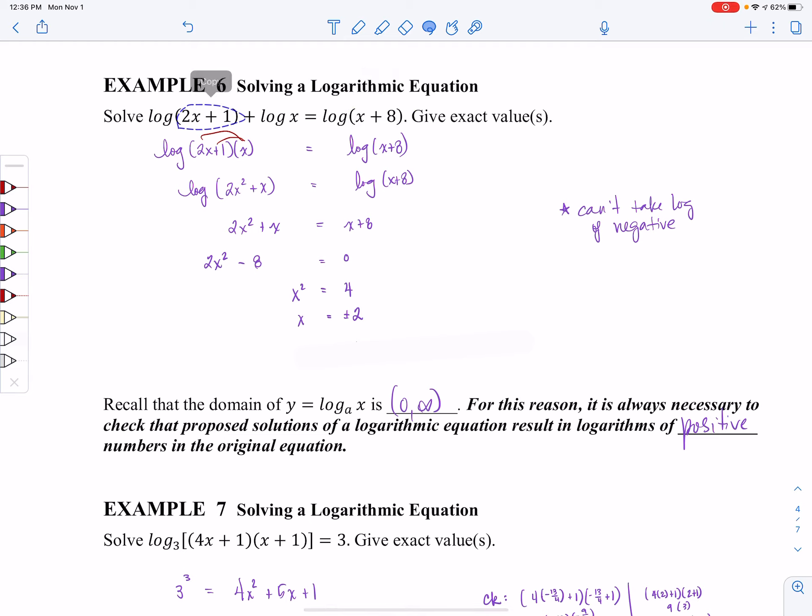Now let's go plug in our negative 2. Well, 2 times negative 2 is negative 4 plus 1. That is taking the log of a negative. So I have to throw out the negative 2, and I'm only allowed to keep the positive 2.